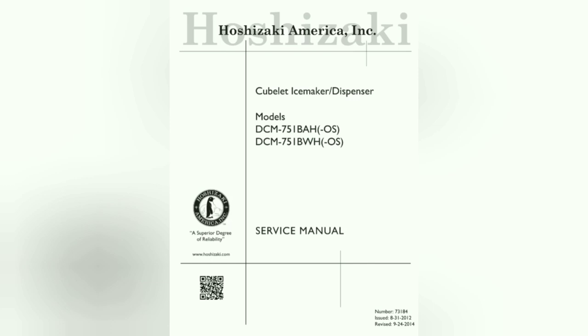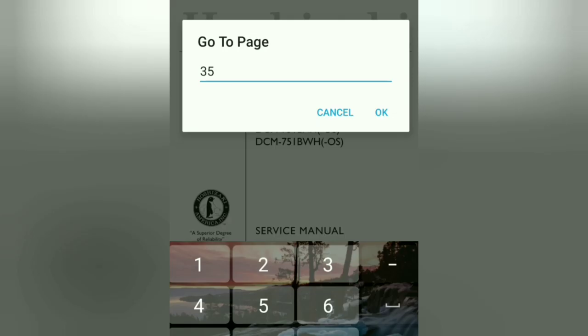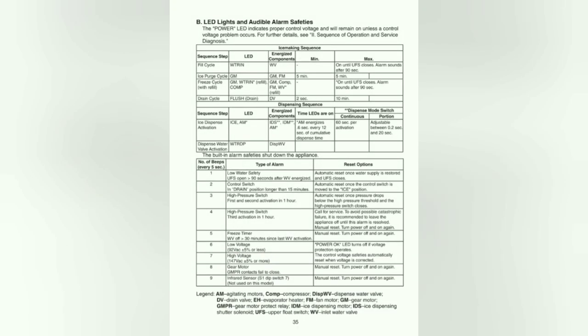Let's see if we can get to our alarm section real quick. If you look down towards the bottom there, we had five beeps, freeze timer, water valve off, 30 minutes since last water valve activation. So, what I believe that means is that it's been 30 minutes since our water valve has last activated, but as we can tell here, our water valve is still dumping water into the machine even though it has been powered off or even though it's been de-energized.